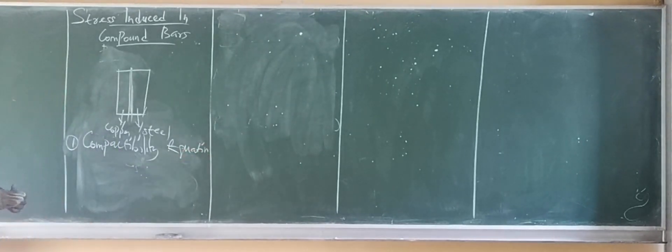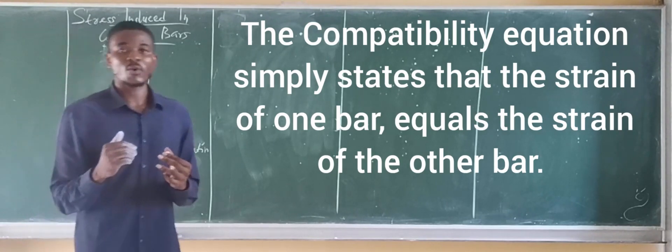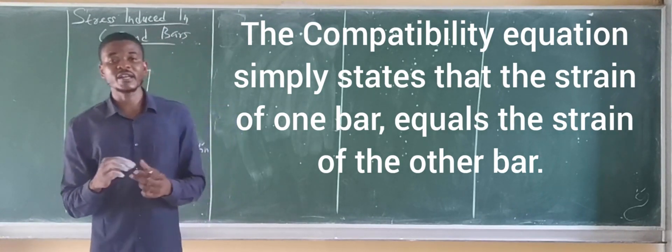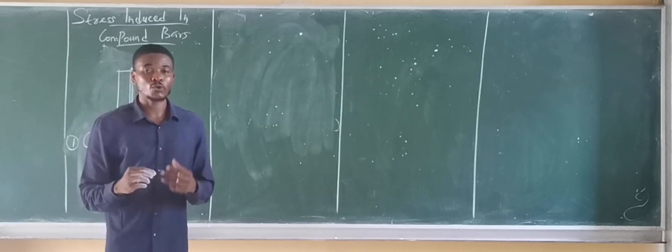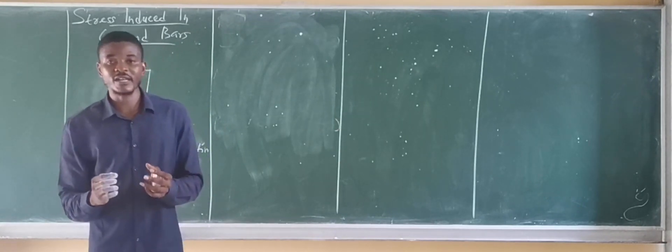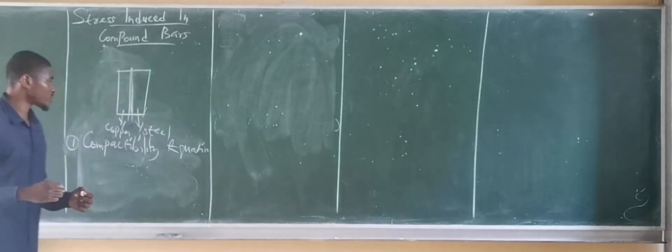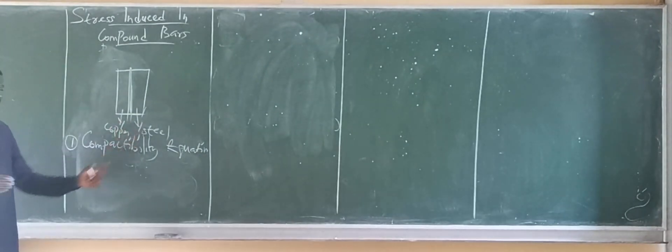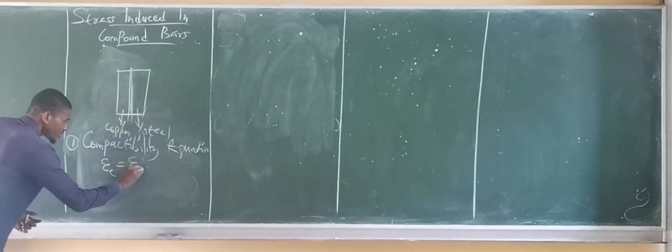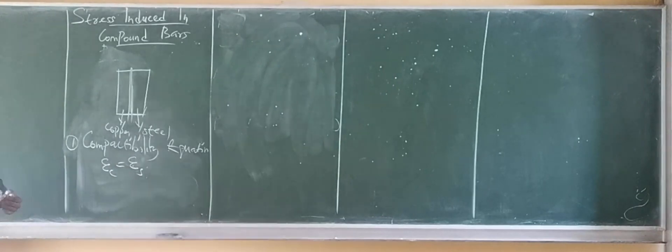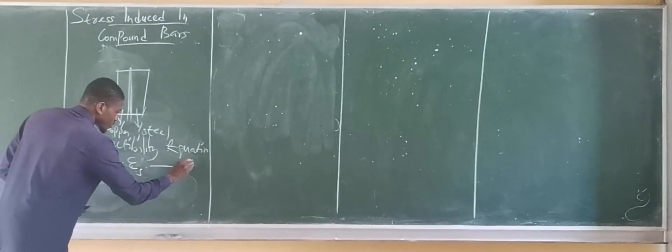The Compatibility Equation simply states that for two bars to be unevenly strained, the strain in one must be equal to the strain of the other. So for two bars to be compatible, the strain of one of the bars must be equal to the strain of the other. For instance, let's consider the copper and the steel bar. In that case, the strain of the copper must be equal to the strain of the steel bar. This is Compatibility Equation. So let's call this equation one.